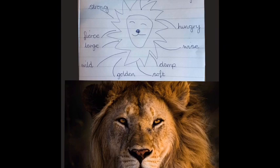Now at the top you can see some of my ideas. I've said orange, he looks hungry, quite wise. I think he'd smell quite damp, maybe, if he's been in the jungle. Quite soft, because his fur looks very soft. So see what ideas you can come up with.